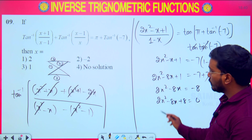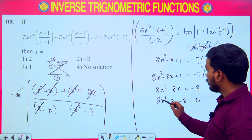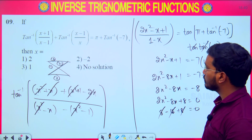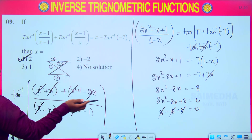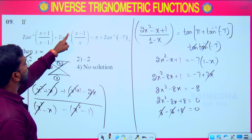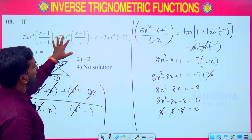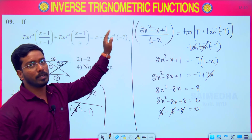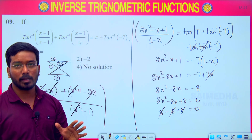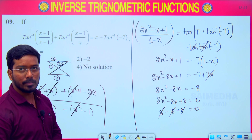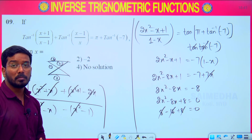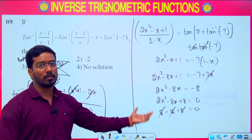Verifying x = 2: 2(4) − 8(2) + 8 = 8 − 16 + 8 = 0. Correct. You can also substitute x = 2 directly: tan⁻¹(3) + tan⁻¹(1) gives tan⁻¹(7), which cancels with tan⁻¹(−7) on the right side. However, follow the method rather than substituting all four options, as checking only option values can be time-consuming if the answer appears as the last option.